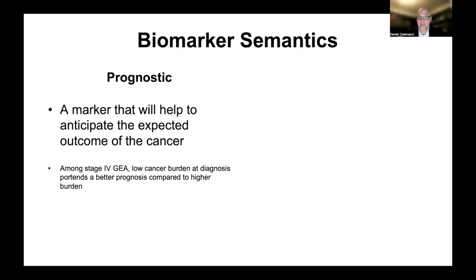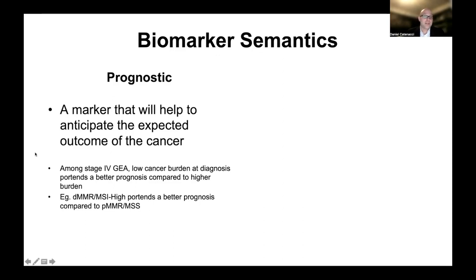This is a prognostic biomarker — it doesn't necessarily help predict whether therapy will be effective, but it is a known prognostic biomarker. Another example is whether a patient's tumor has mismatch repair deficiency. Deficient mismatch repair, which goes along with MSI-high tumors, portends a better prognosis compared to tumors that are proficient in mismatch repair and microsatellite stable. The main mutations in this abnormality are frameshift mutations, which lead to many immunogenic proteins and a strong immune response. After surgery, patients with mismatch repair deficiency tend to have a better prognosis.